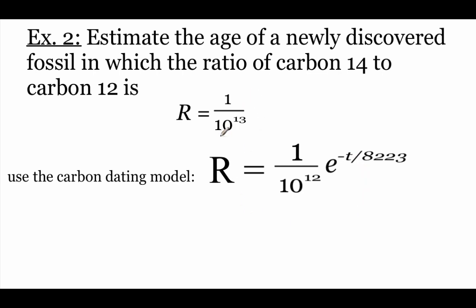So what I'm going to do is take this R value that we were given and just plug it in for R. So we've got 1 over 10 to the 13th power equals 1 over 10 to the 12th power times e to the power of negative t divided by 8,223.